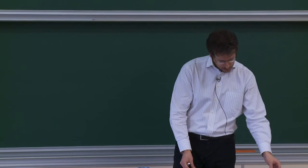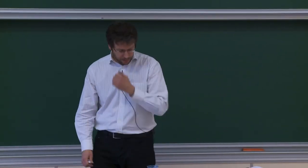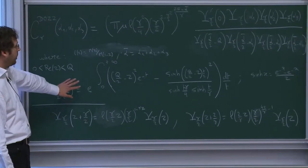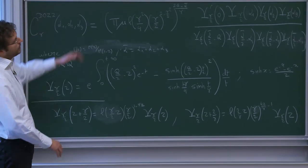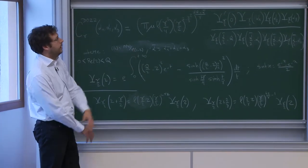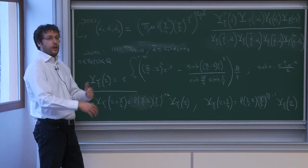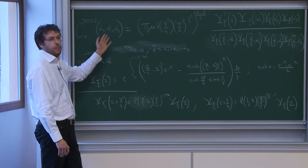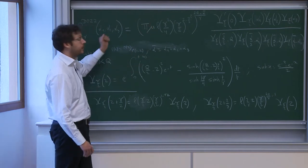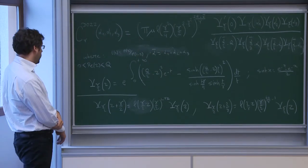I'm going to explain why this formula is so special — it satisfies a unique system of functional equations. These functional equations stem from a special property of Zamolodchikov's Upsilon function. L of Z is gamma(Z) over gamma(1 minus Z). When you shift the variable in Zamolodchikov's Upsilon function, you get the same thing times a ratio of gamma functions — essentially up to some power. There's also a dual equation, and this really characterizes Zamolodchikov's Upsilon function.